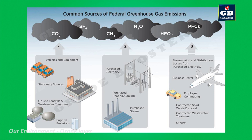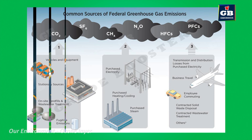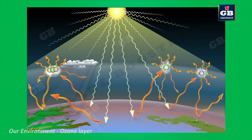CFCs are not the only problem for ozone — nearly a hundred types of gases contribute to ozone depletion. So reducing the usage of these kinds of gases helps to protect the ozone layer.